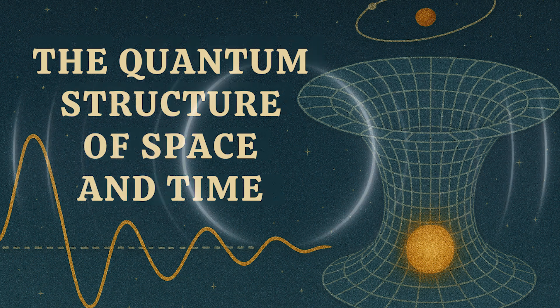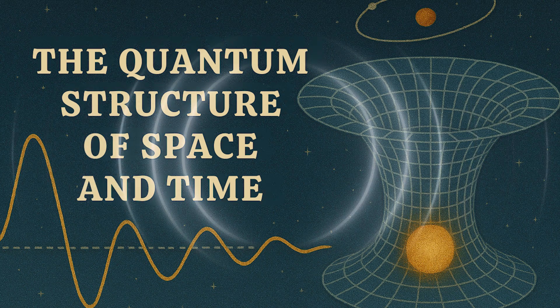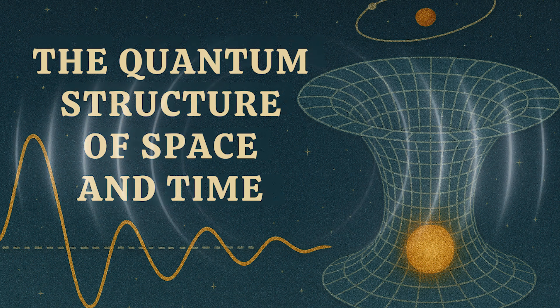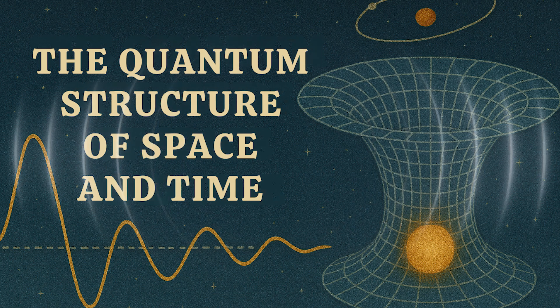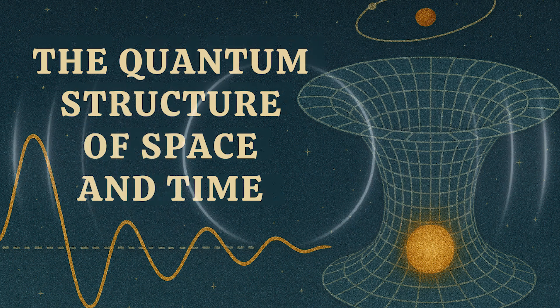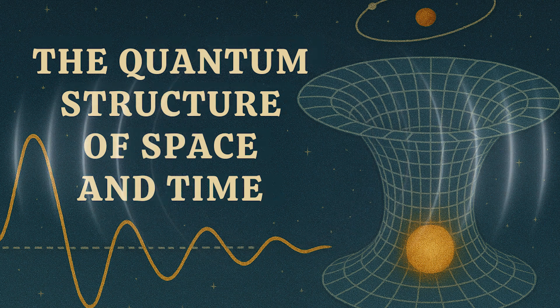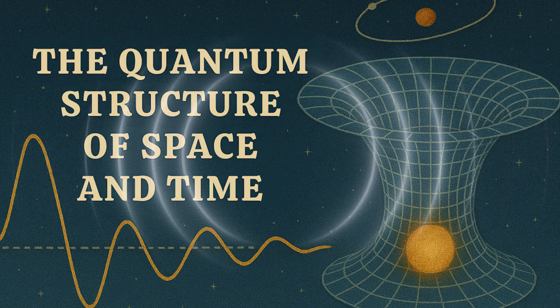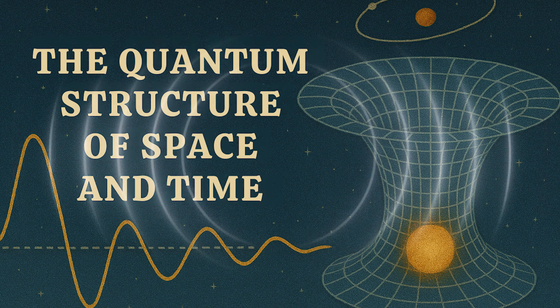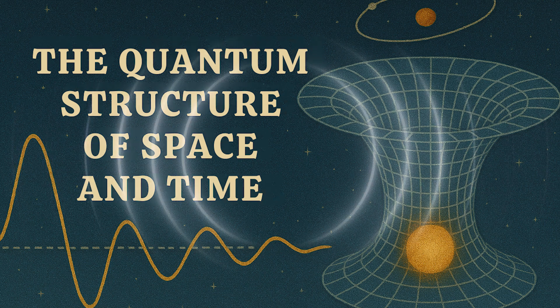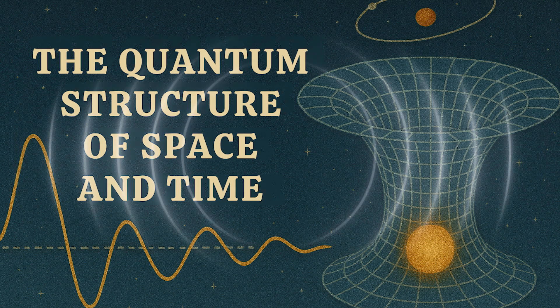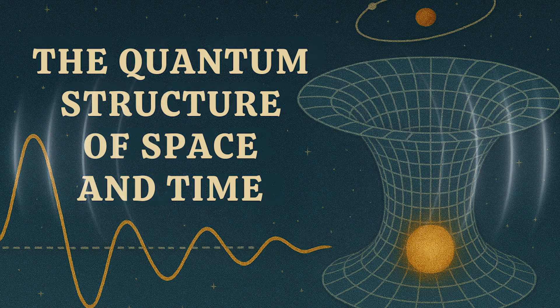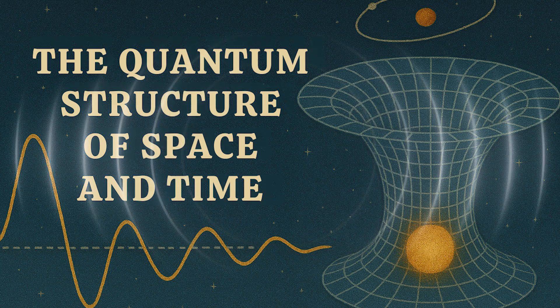My brain is definitely stretching now. Can we ground this a bit? You mentioned some examples of how space could emerge. Sure. The sources give a few. An early, simpler one comes from studying 2D gravity using something called matrix models. Matrix models, like arrays of numbers. Exactly. Just matrices following quantum rules. And in certain limits, what pops out is an effective description that looks just like a two-dimensional space with gravity obeying general covariance. So the space and its rules weren't put in, they just happened from the math of the matrices?